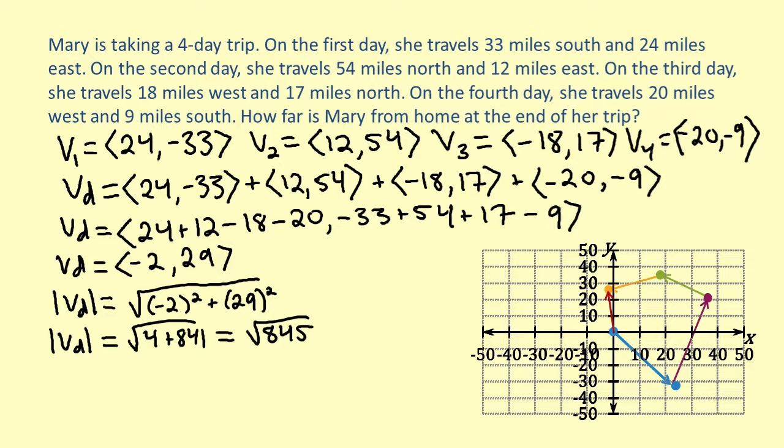Now, we have a perfect square because 845 equals 169 times 5. The square root of 169 is 13, so we can rewrite the expression as 13 times the square root of 5.